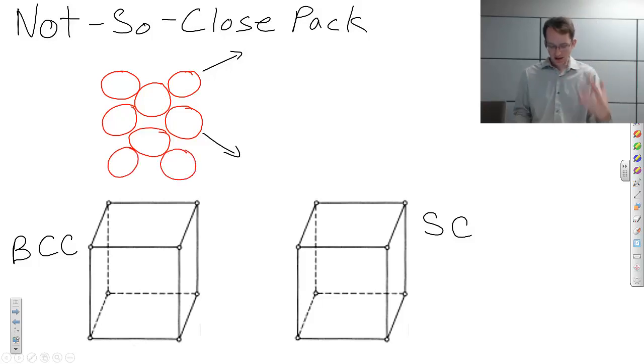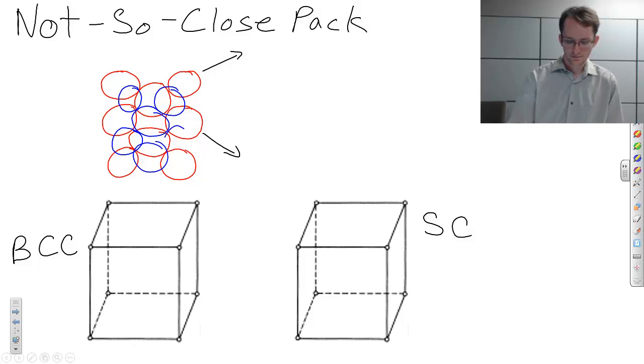So, how would another set of atoms sit on top of this base layer of atoms? Well, very similarly to what we saw before, we'd have another plane of atoms that like to sit in between the spaces of the atoms below. So, it looks similar like this. And that's repeated.